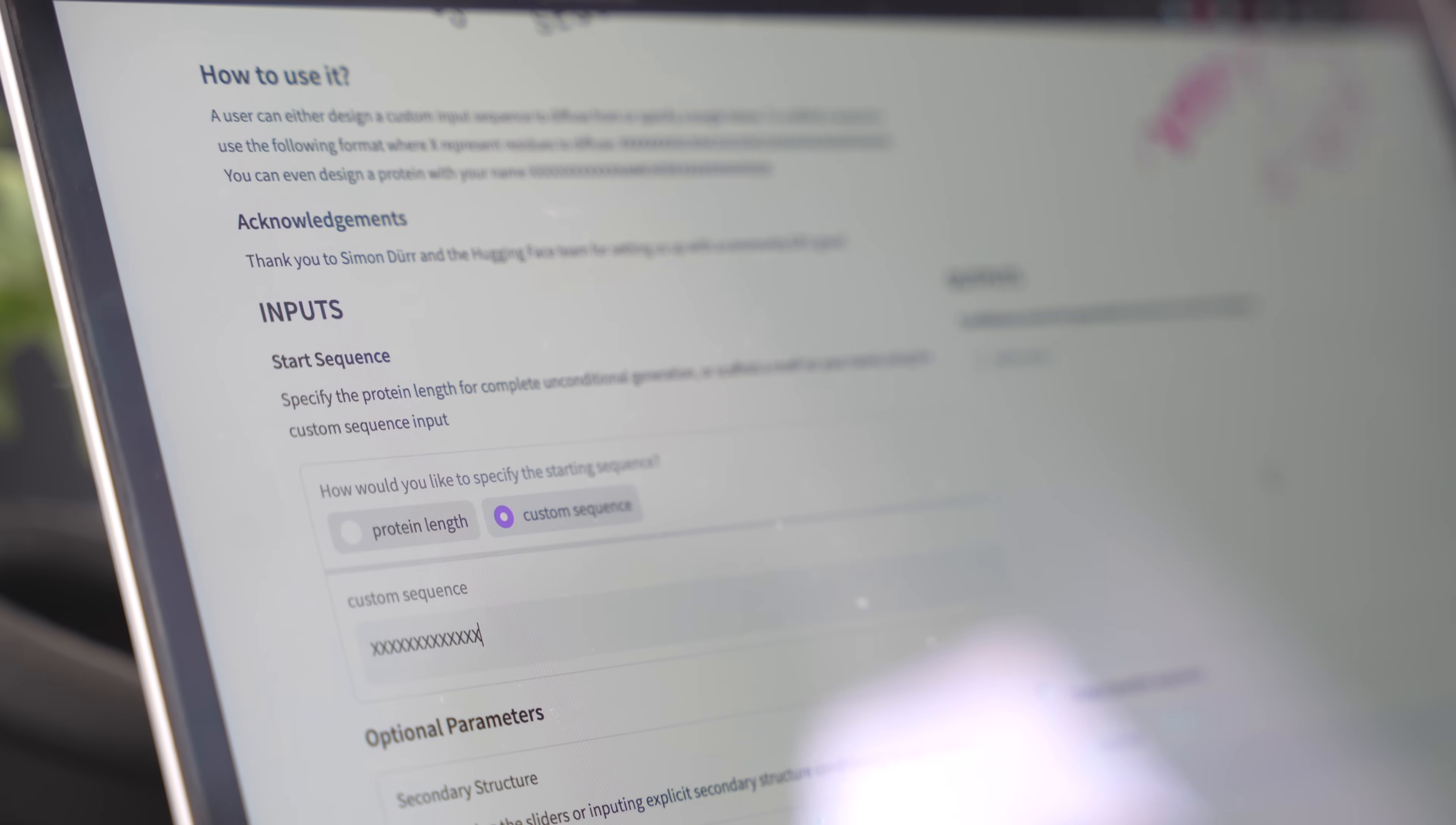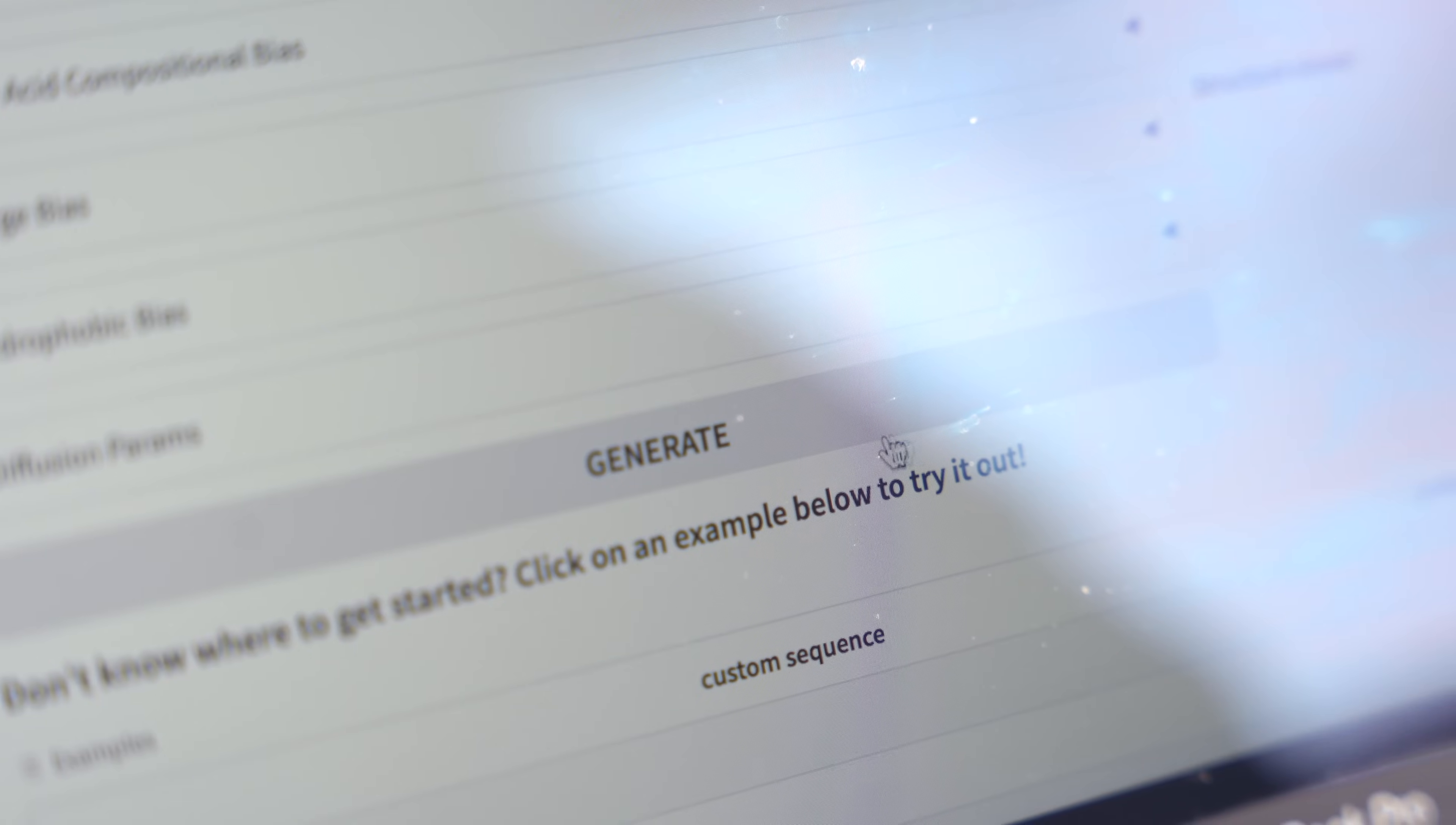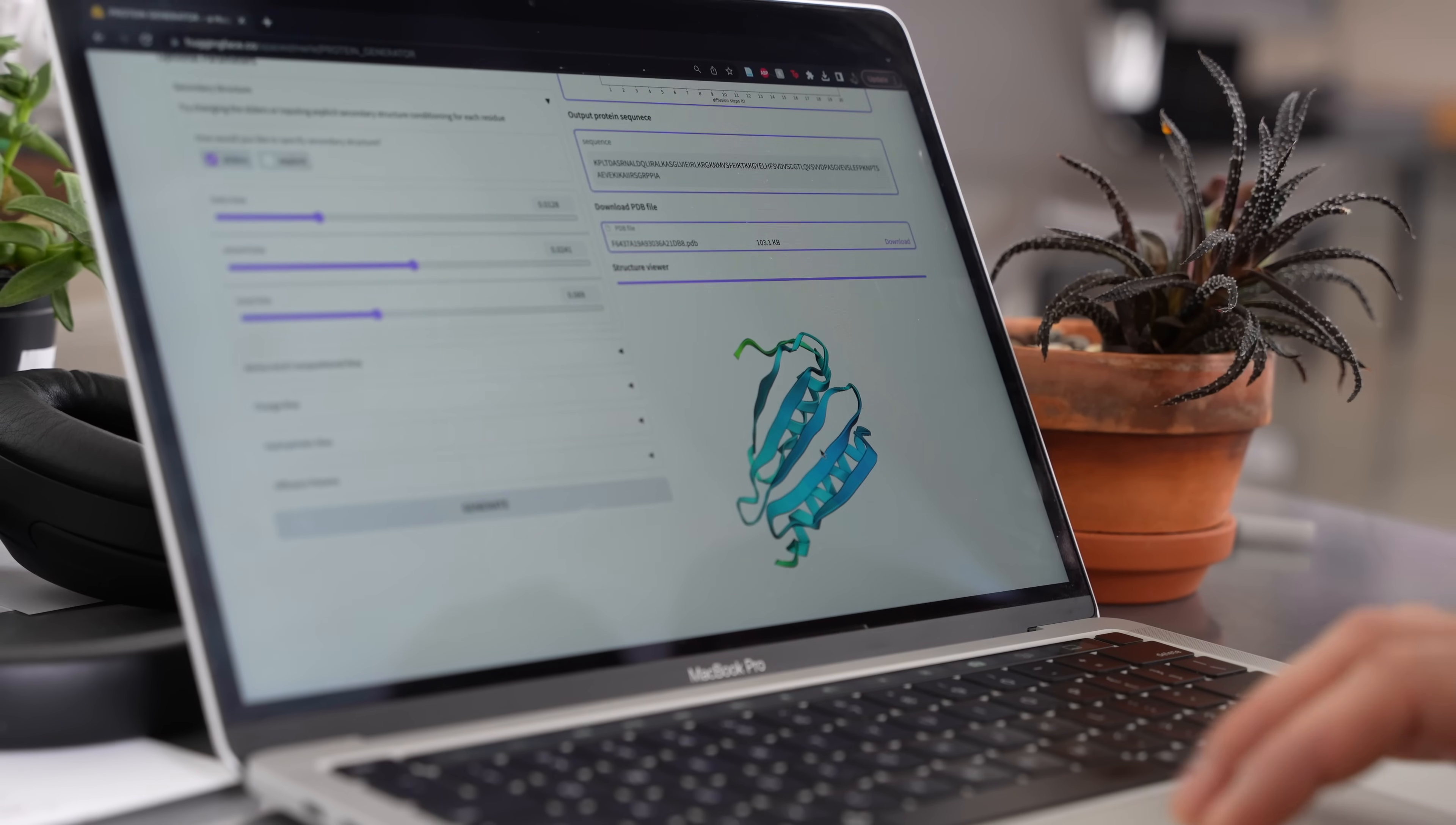They can type in a new protein sequence or a motif that they're interested in. Once you input your starting sequence and parameters, you just click generate and the model in the background will run for you and design you a new protein.